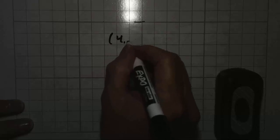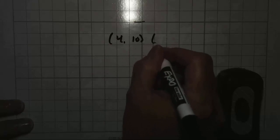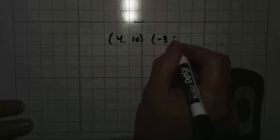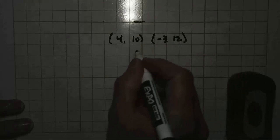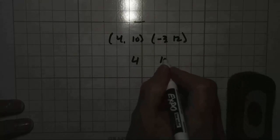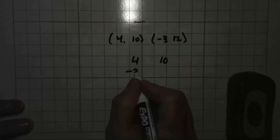Let's try this one. 4, 10 is one endpoint and negative 3, 12 is the other endpoint. So again, 4, 10. And underneath them, write negative 3, 12. Great big line.